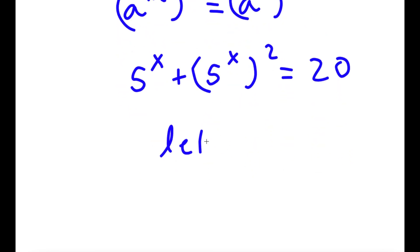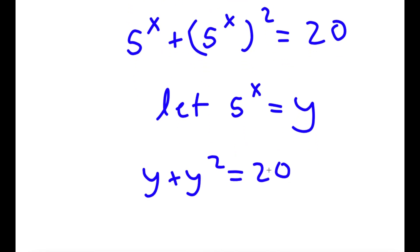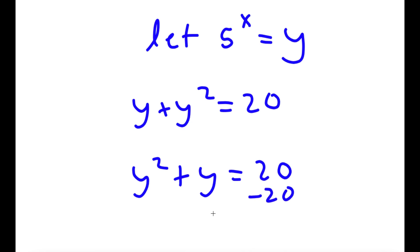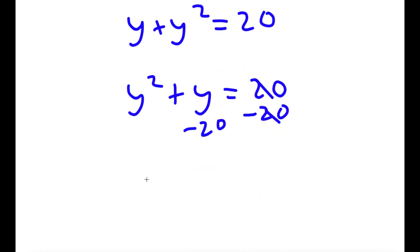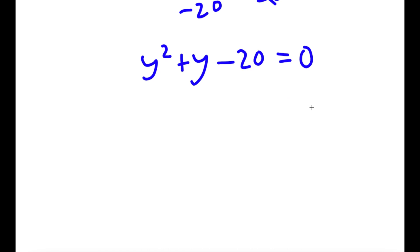Now I'm going to let 5 to the power of x equal to the variable y. So now if I substitute in y for 5 to the power of x, I get y plus y squared is equal to 20. I can rewrite this as y squared plus y is equal to 20. Subtracting 20 on both sides gives y squared plus y minus 20 is equal to 0.